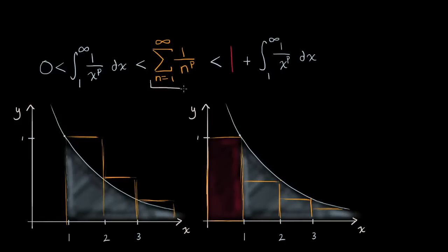You might recognize what we have here in yellow as the general form of a p-series. What we're going to do in this video is think about under which conditions — for what p's — will this p-series converge. And for it to be a p-series, by definition, p is going to be greater than zero.